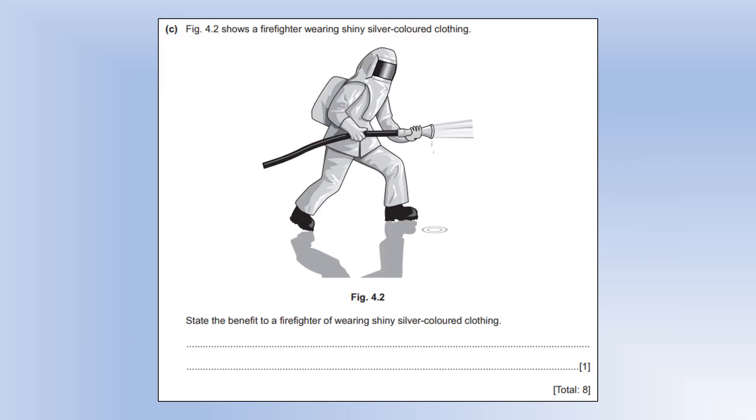The diagram shows a firefighter wearing shiny silver coloured clothing. State the benefit of wearing shiny silver coloured clothing. It's there to reduce radiation, so the clothing reflects infrared radiation, preventing the firefighter from getting burned.